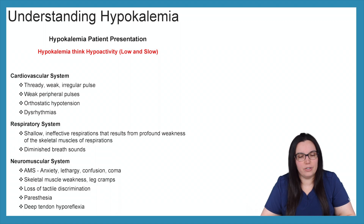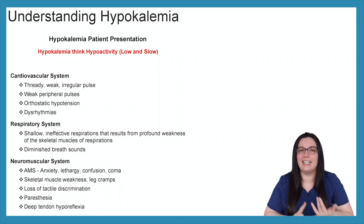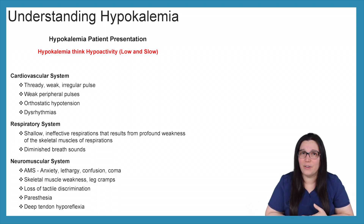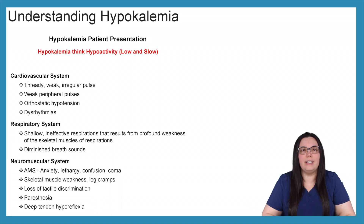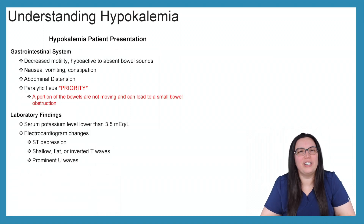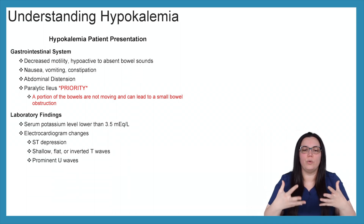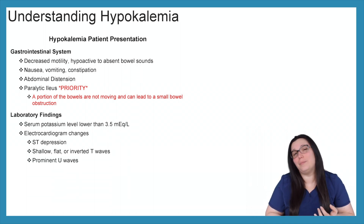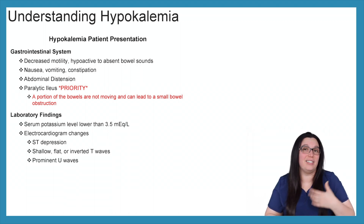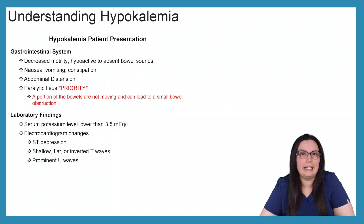When it comes to our neuromuscular system, we're going to have altered mental status — anxiety, lethargy, confusion, and possibly even coma depending on the severity of the hypokalemia. Skeletal muscle weakness, leg cramps due to decreased potassium, loss of tactile discrimination, paresthesias, and deep tendon hyporeflexia. For the gastrointestinal system — again, think low and slow — we're going to have decreased motility, hypoactive or absent bowel sounds, nausea, vomiting, constipation, abdominal distension, and you can even see a paralytic ileus.